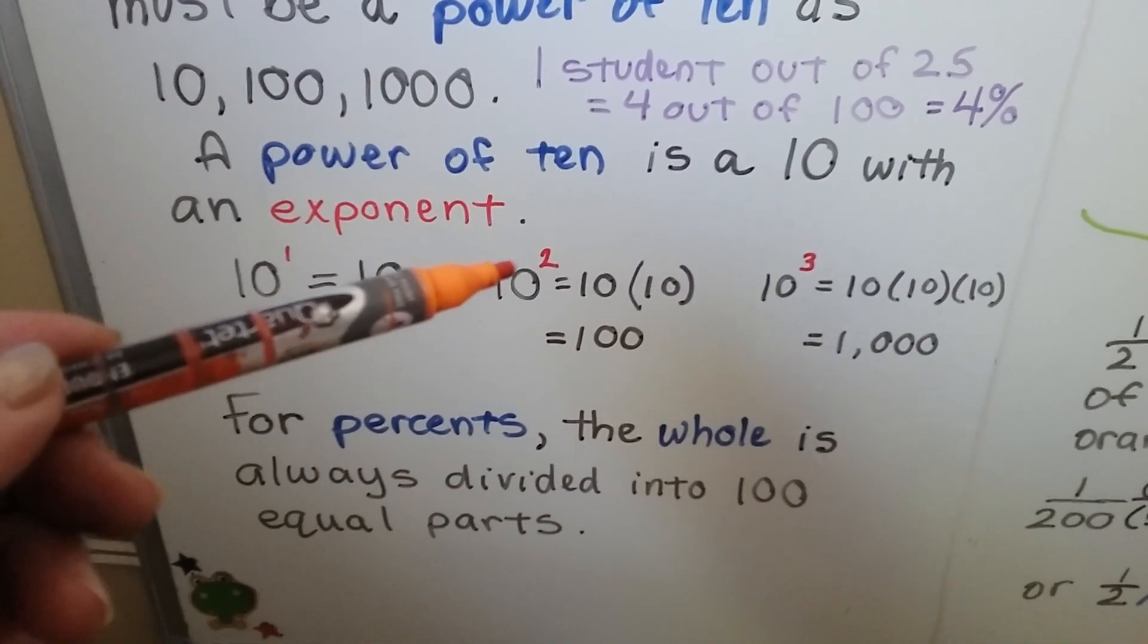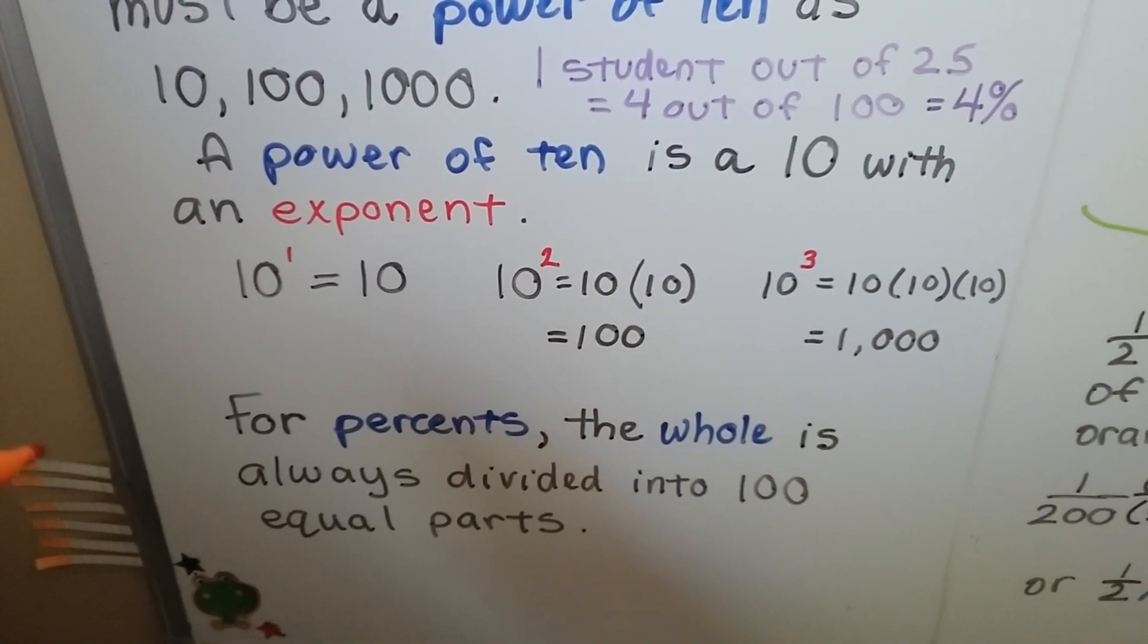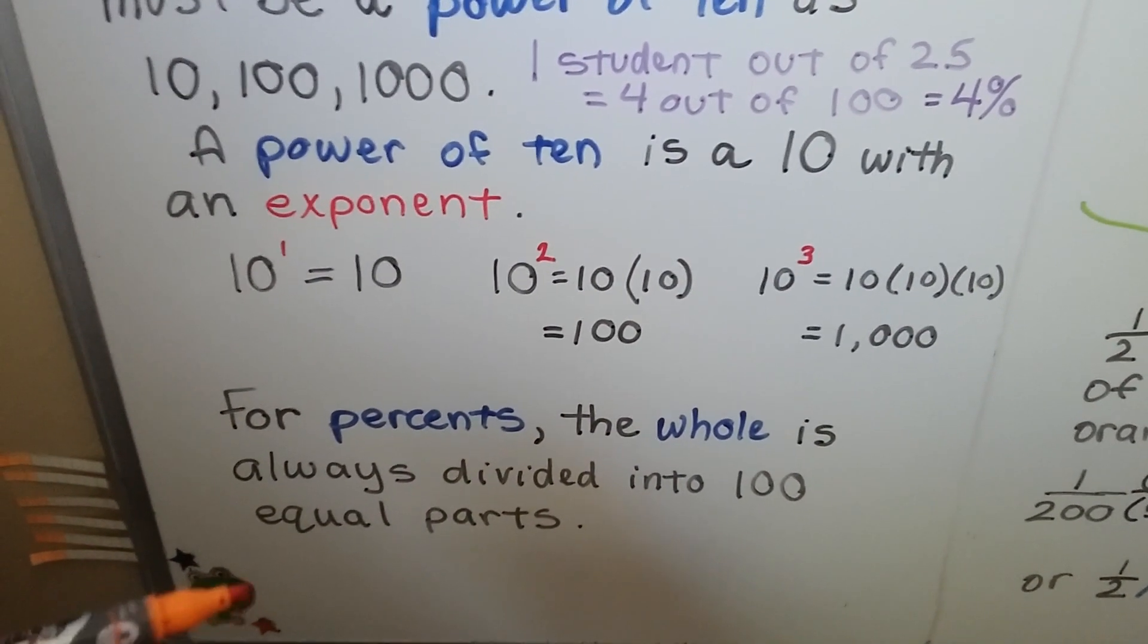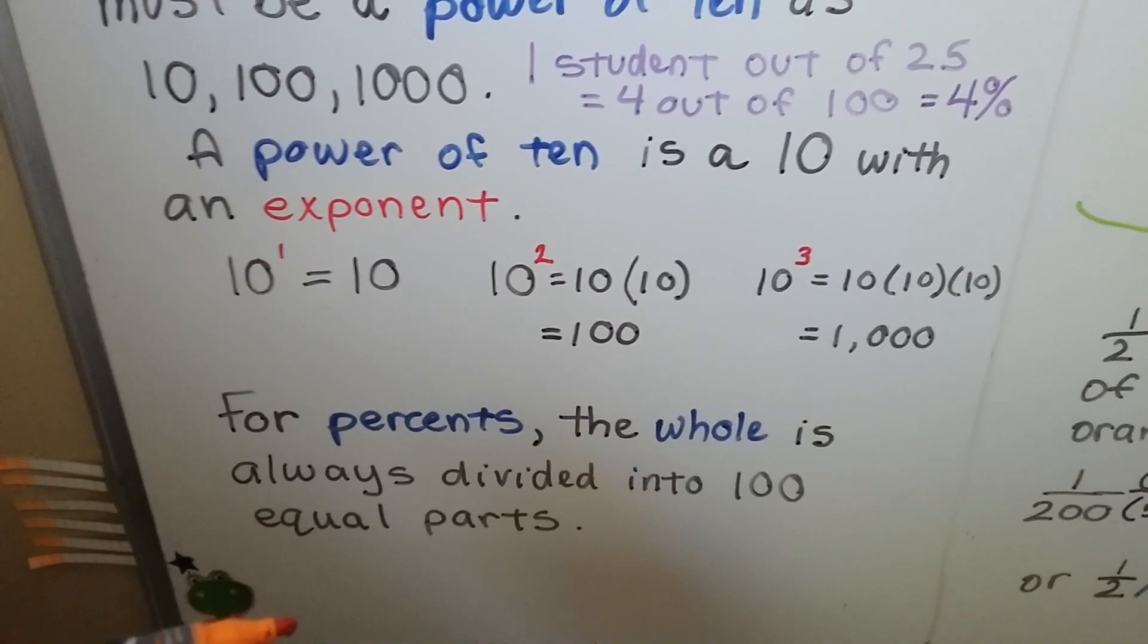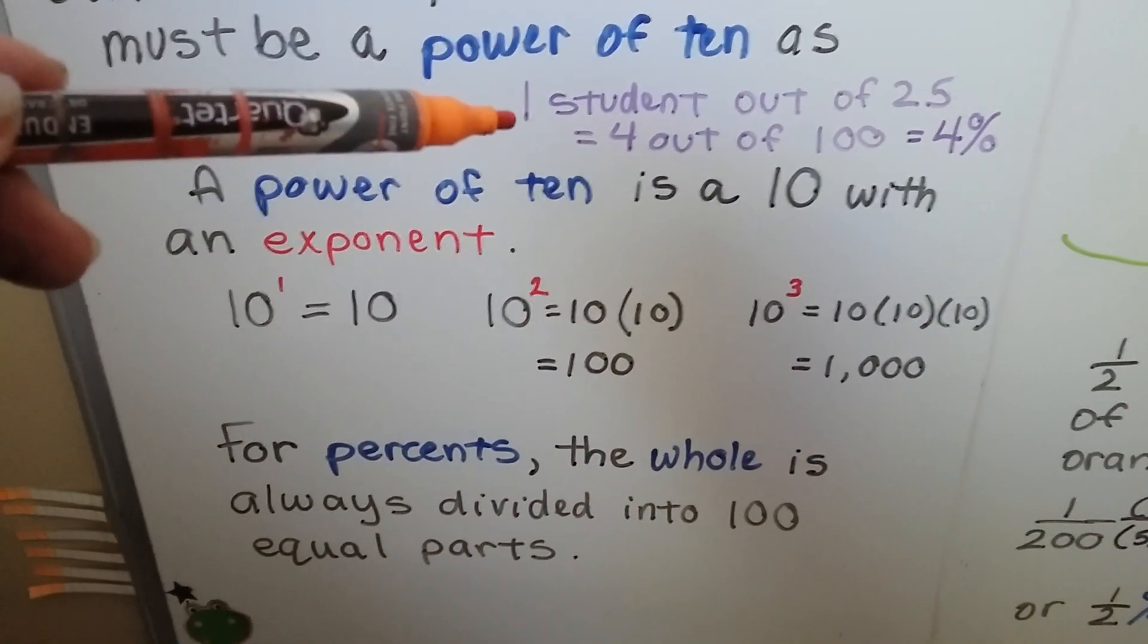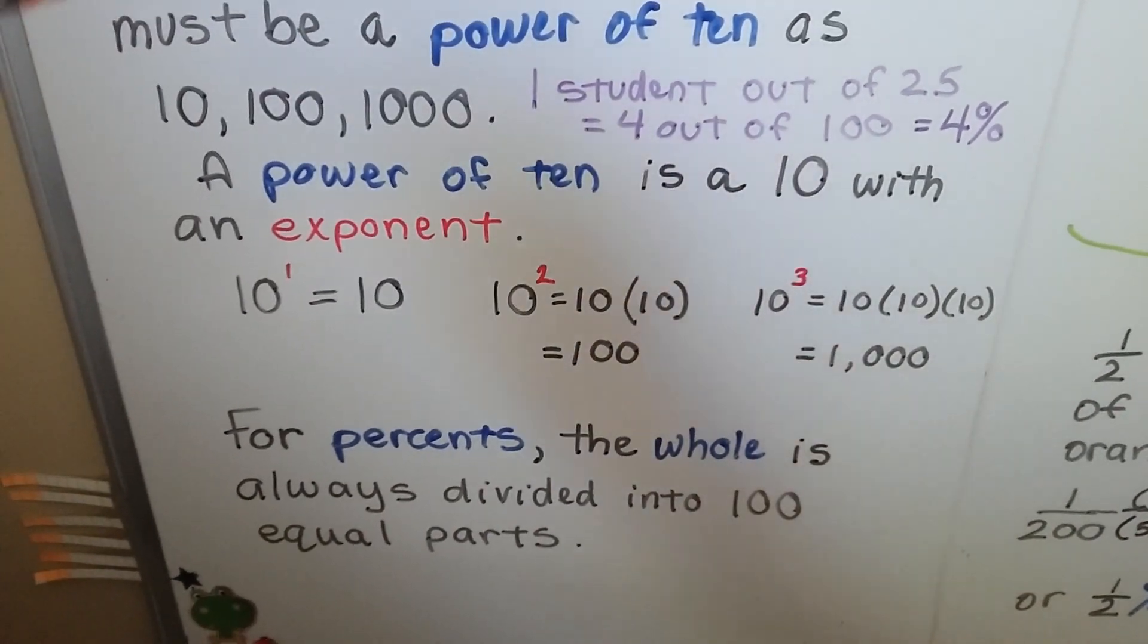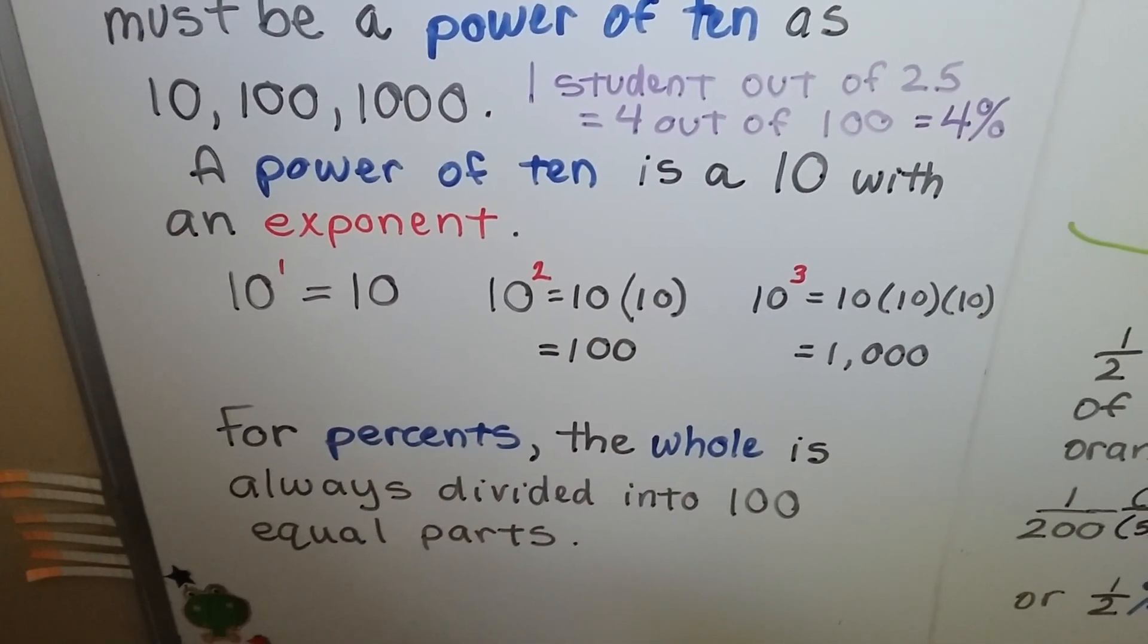10 to the first power, 10 to the second power, 10 to the third power. So for percents, the whole is always divided into 100 equal parts. That's why 1 student out of 25 would be 4 out of 100. And that would be 4%.